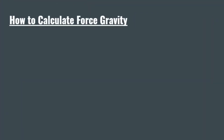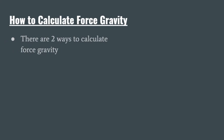So the first thing we want to talk about is how do we calculate force gravity? Well, some of you might be thinking, Mr. Weiss, we already did these notes. We know how to calculate force gravity. It's just force gravity equals mass times gravity. And you would be partly correct, because there are actually two ways to calculate force gravity. We talked about the easy and simple way, and that's the force gravity equals mass times gravity way.